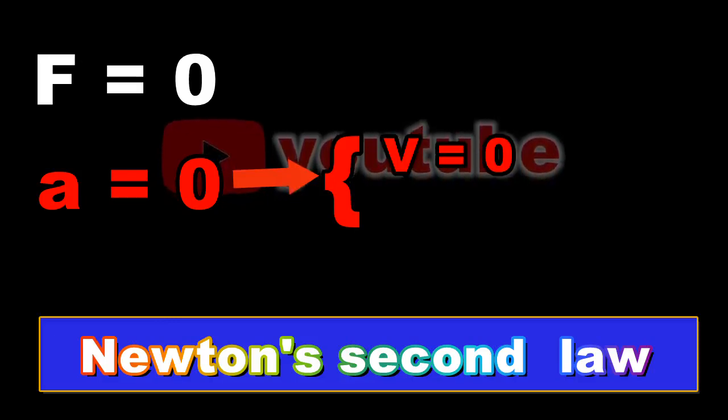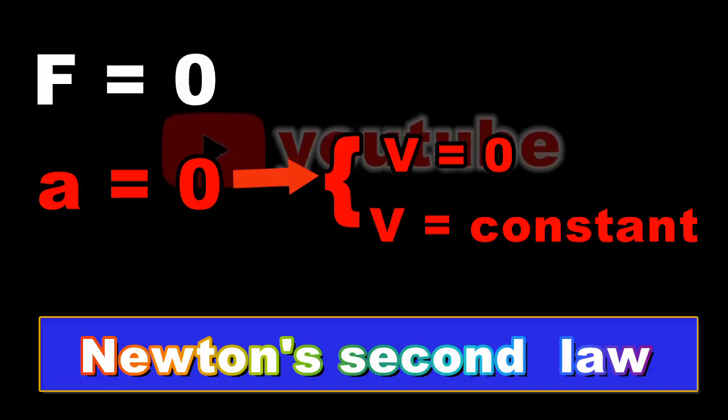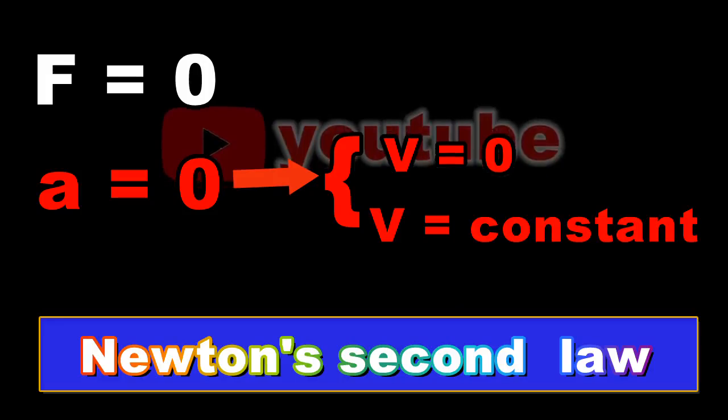That is, if the object is stationary, it remains stationary, and if it is in motion, it moves in a straight line at a constant speed.